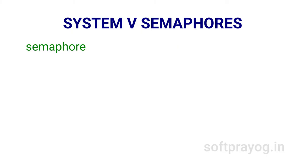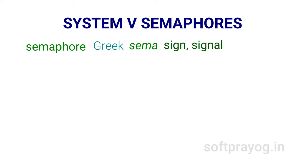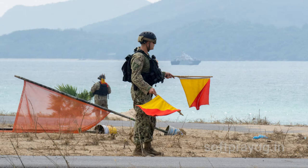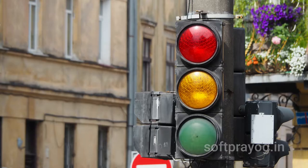But first, a quick recap of underlying concepts. What is a semaphore? The word semaphore comes from the Greek word SEMA which means a sign or a signal. Semaphore means a system for conveying information using visual signals. Examples are flag positions, railroad signals, traffic signals, etc.